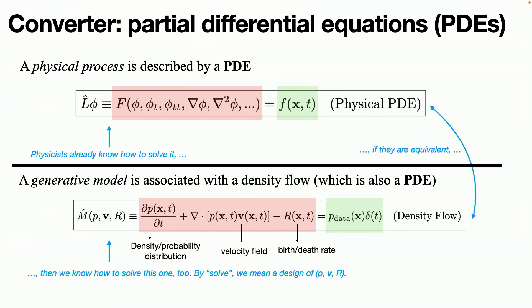So pardon me for being a bit technical in the following. To build the bridge between physics and the generative model, the key idea here is that they both can be described by partial differential equations. Physicists use something similar to this to describe physical phenomena, including Poisson equation, including diffusion equation.